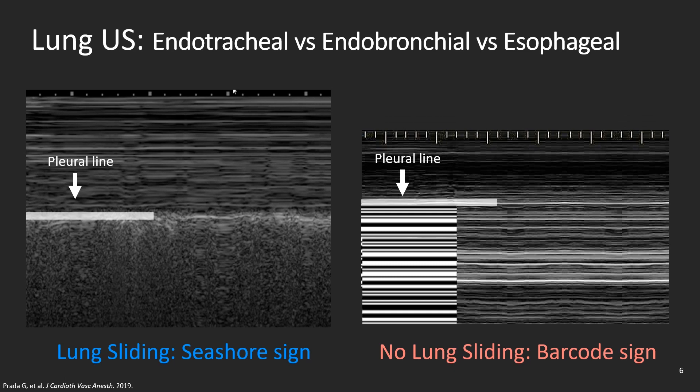Moving on, lung ultrasound will tell you whether the tube is in the trachea, a main stem bronchus meaning endobronchial or selective intubation, or in the esophagus. But first, let's quickly review the concept of lung sliding. On the left we have a typical M-mode image of lung sliding or seashore sign, and on the right an M-mode image of absent lung sliding or barcode sign. The presence of lung sliding means that that part of the lung you're scanning is moving as a result of air going in and out — the lung is inflating and expanding, then deflating and contracting — and while it does so, the visceral pleura slides back and forth against the static parietal pleura. In mechanically ventilated patients, the presence of lung sliding means that the lung you're scanning is being ventilated.